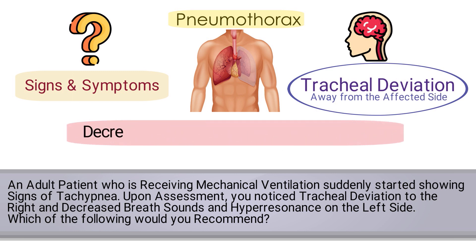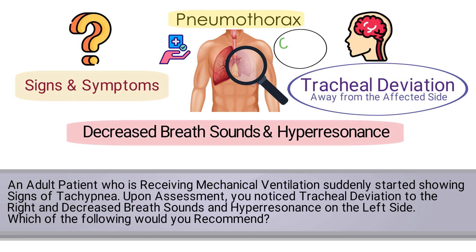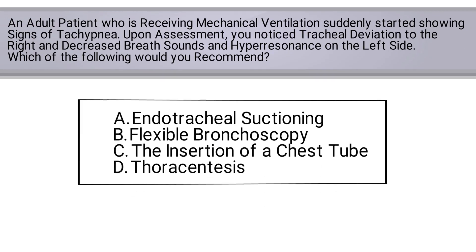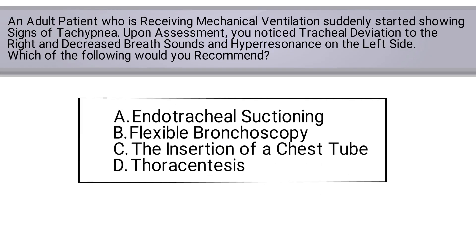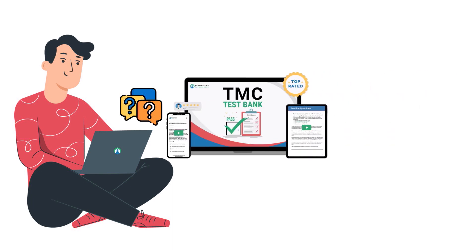They will also have decreased breath sounds and hyper resonance on the affected side. Therefore, to treat a pneumothorax you should recommend the immediate insertion of a chest tube on the affected side, which means that the correct answer is C — the insertion of a chest tube.